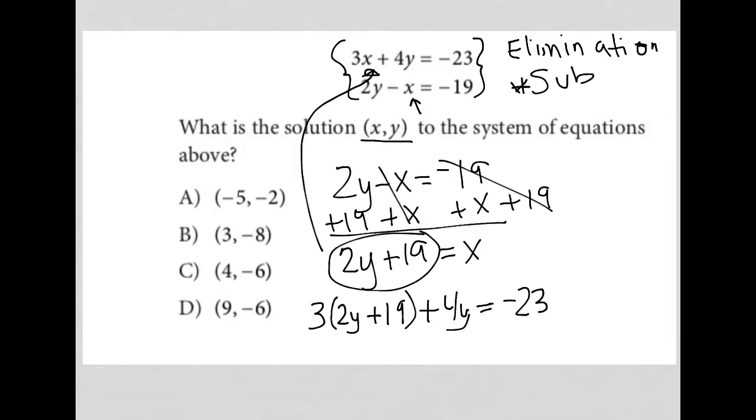So when we solve this out I get 6y plus 57 plus 4y equals negative 23. What you'll see is that 6y plus 4y is equal to 10y, so I'm going to subtract 57 from both sides. Negative 23 minus 57 is negative 80.